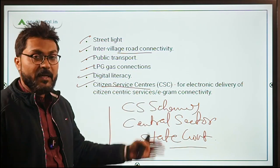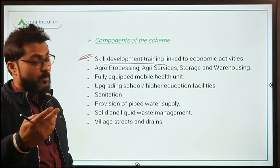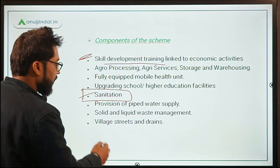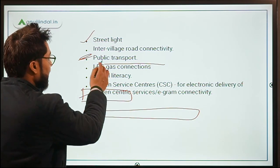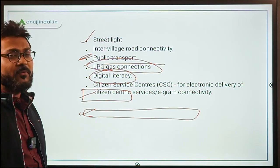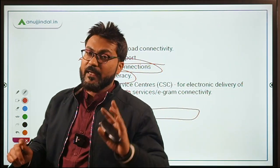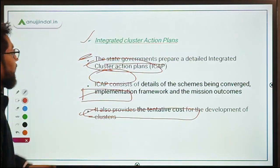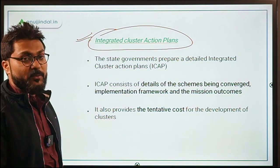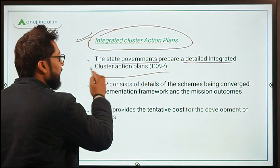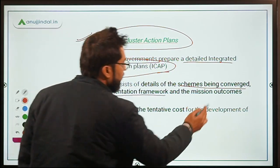These components are implemented through the convergence of various centrally sponsored schemes, central sector schemes, and state government schemes. For example, skill development uses the National Skill Development Mission; sanitation uses Swachh Bharat Mission Grameen; street lighting uses SLNP and UJALA projects; LPG connections use Pradhan Mantri Ujjwala Yojana. State governments prepare detailed Integrated Cluster Action Plans (ICAPs) and present them to the Ministry of Rural Development.